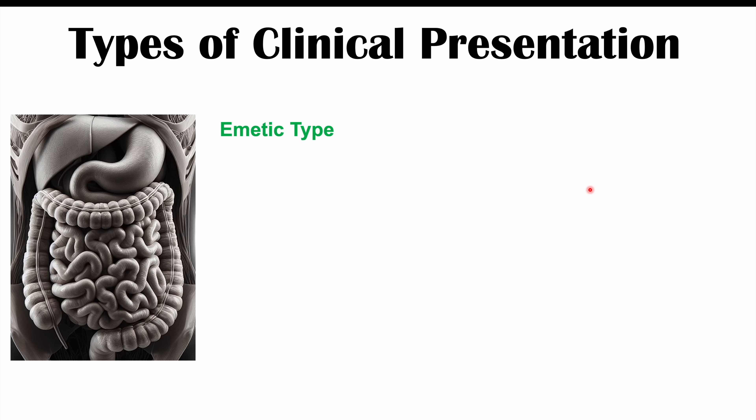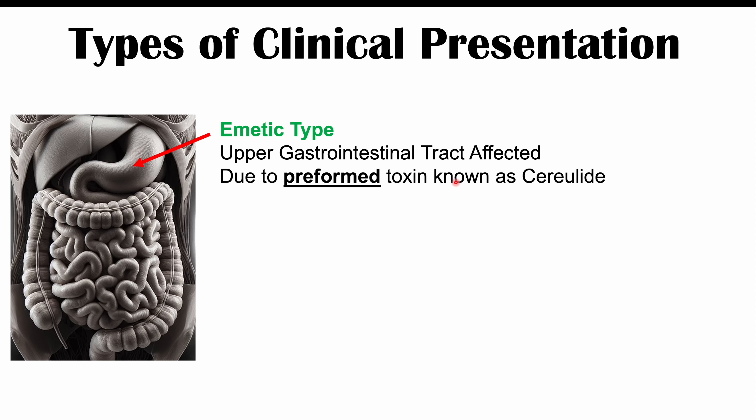There are two types of gastrointestinal illnesses from Bacillus cereus. The emetic type affects the upper gastrointestinal tract — mainly the stomach and duodenum — and is due to a preformed toxin known as cereulide. This toxin is already present in the food and is not formed within the body. It acts to cause nausea and vomiting, thought to affect the central nervous system, though the exact mechanism isn't entirely known.